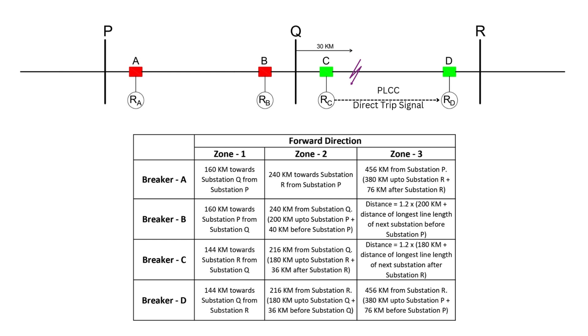And that's how distance protection works. It's not only efficient in isolating faulty sections, but it also provides essential backup protection. The zone-based settings ensure that only the affected sections are disconnected, keeping the rest of the system running smoothly.